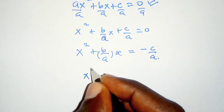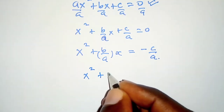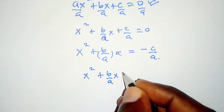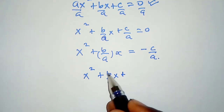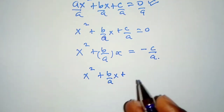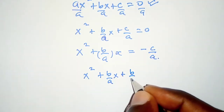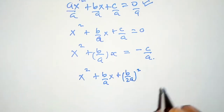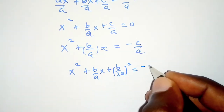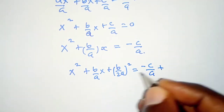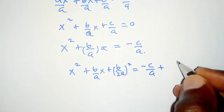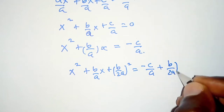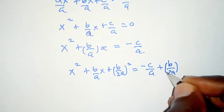Completing the square on the left hand side, we will have x squared plus b over a times x plus one half of the coefficient squared — that is b over 2a squared — equals negative c over a plus the same value we added, which is b over 2a squared.